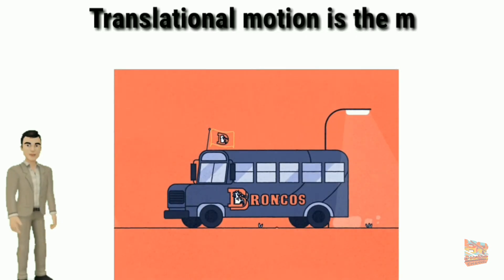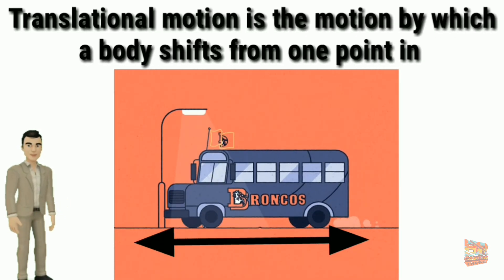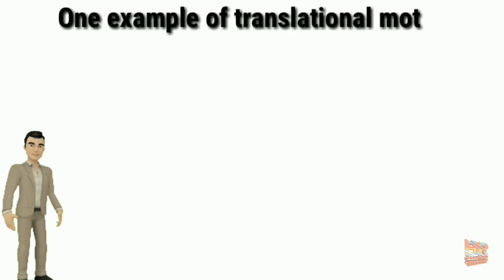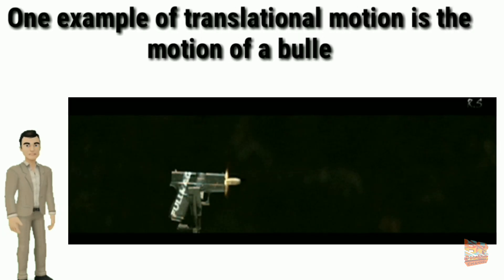Translational motion is the motion by which a body shifts from one point in space to another. One example of translational motion is the motion of a bullet fired from a gun.